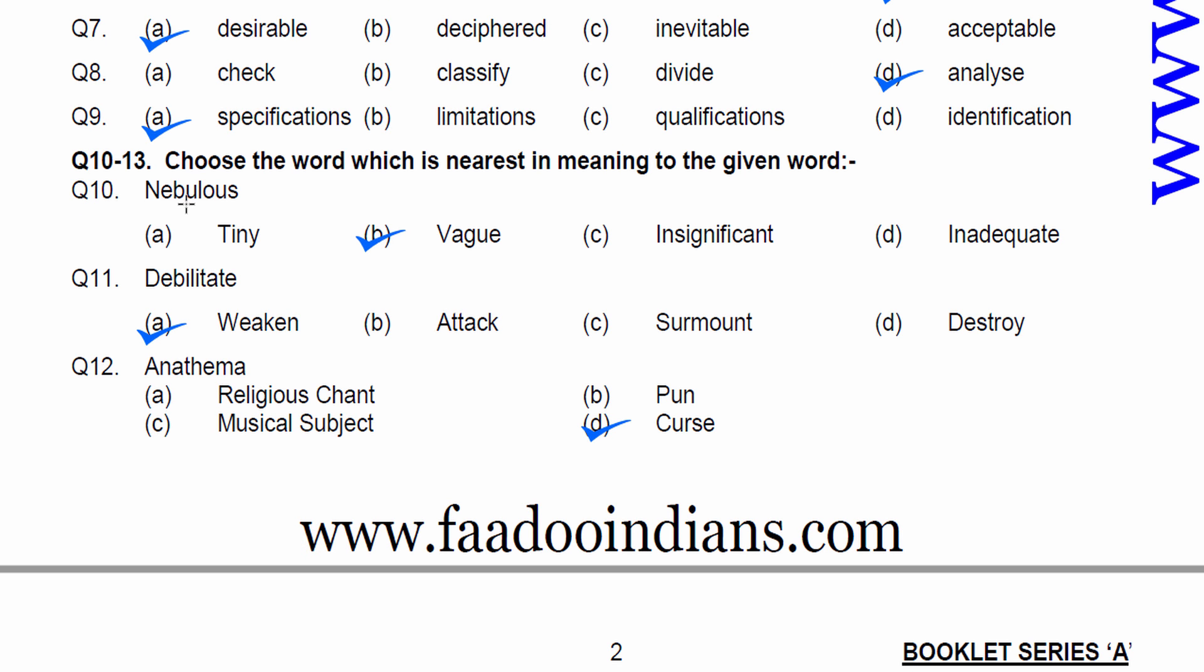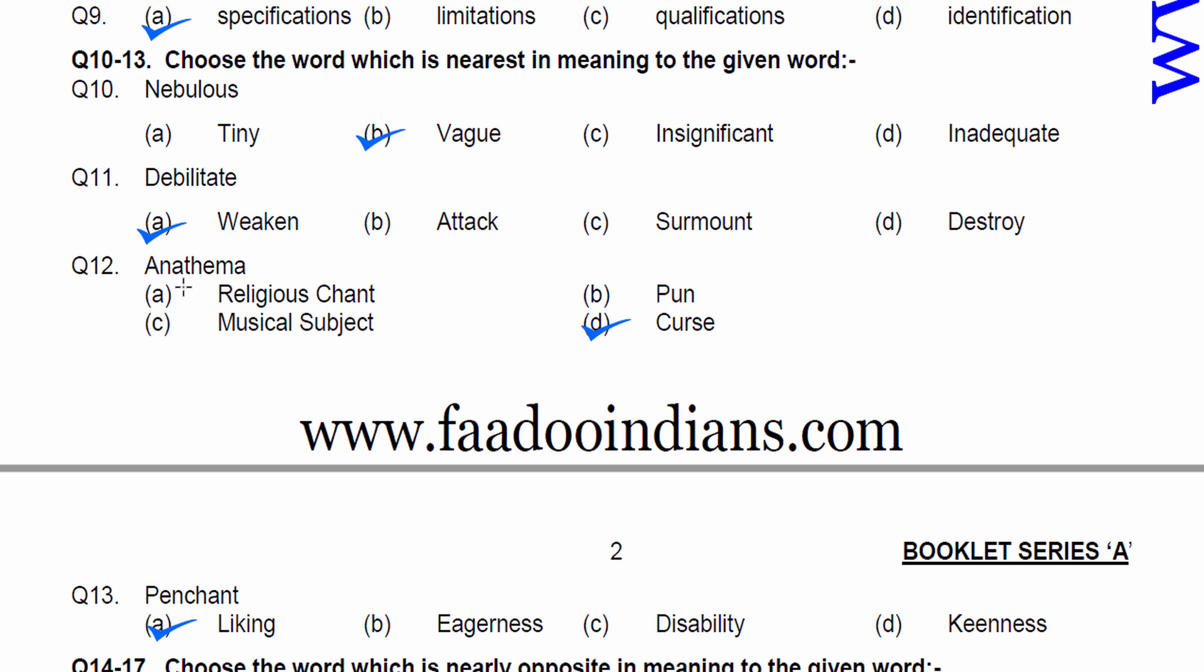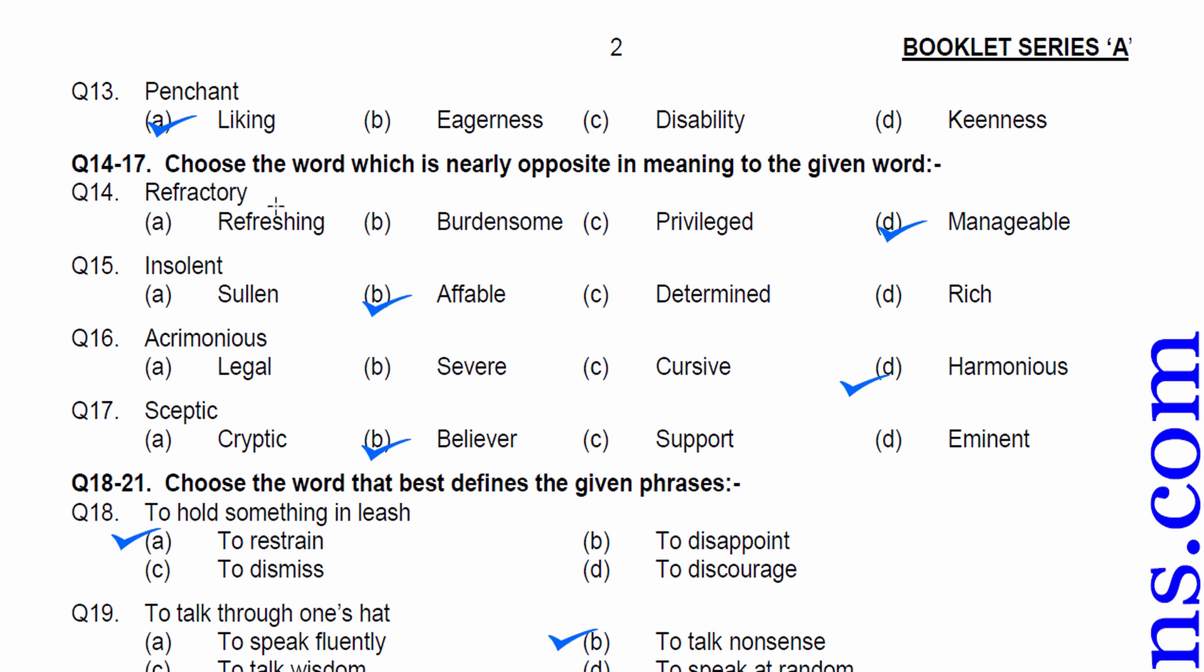Choose the word which is nearest in the meaning in the given word. Nebulous. Nebulous means vague. Both means ill-defined, not clear. Therefore, B is the option. Eleventh. Debilitate means weaken. Therefore, A would be your answer. Twelfth would be anathema. Something you dislike or sin or curse. Thirteen. Penchant. Penchant means heartless or liking.